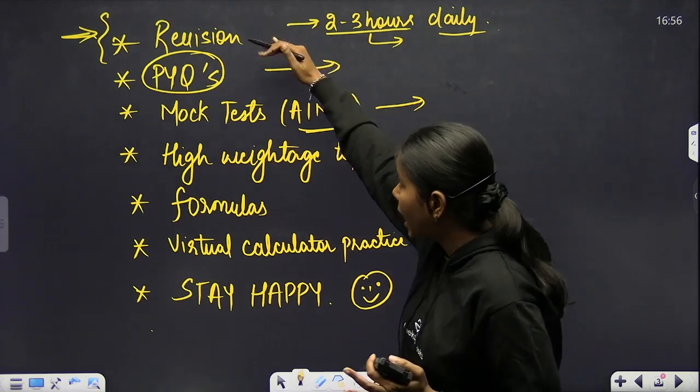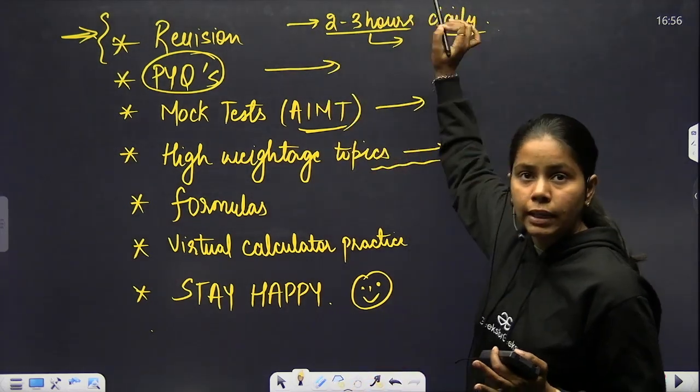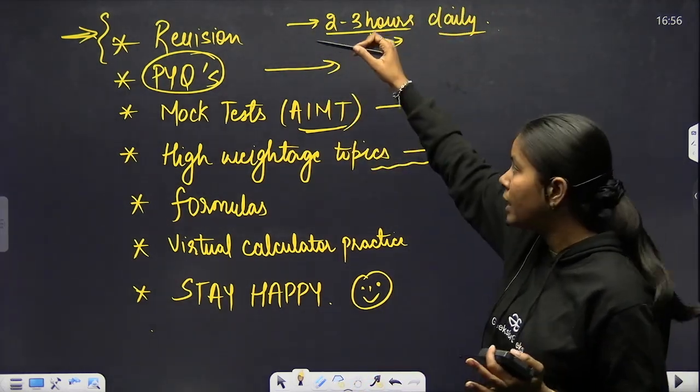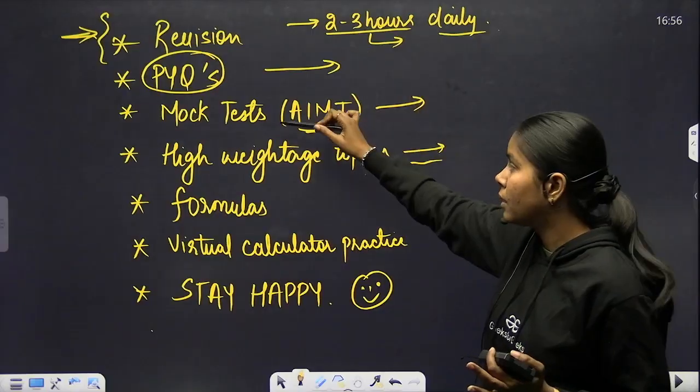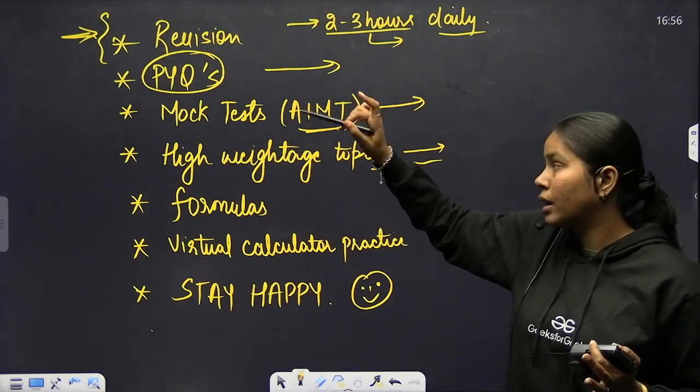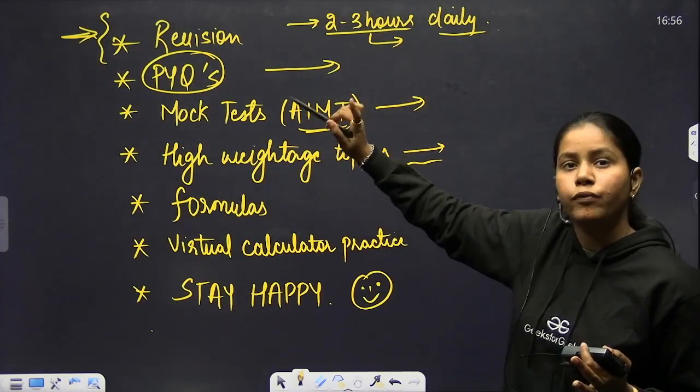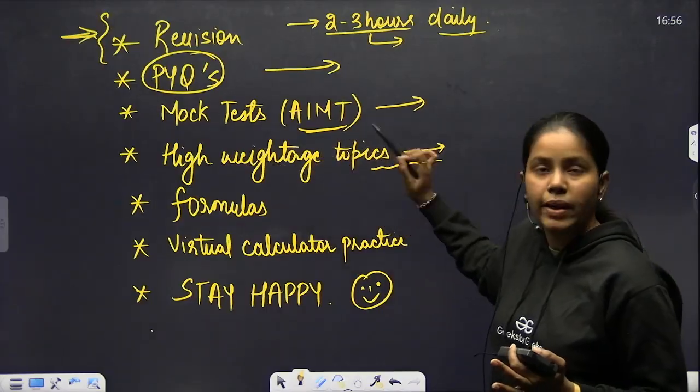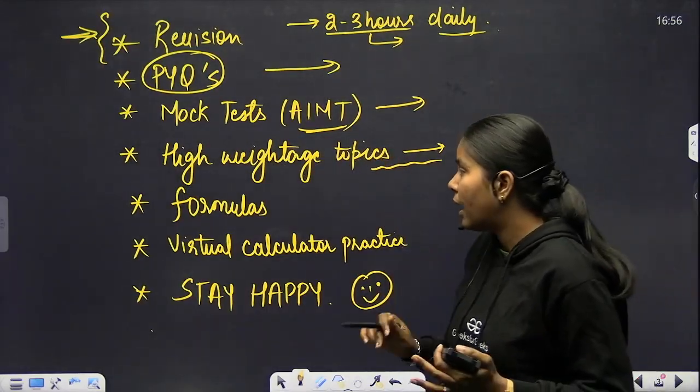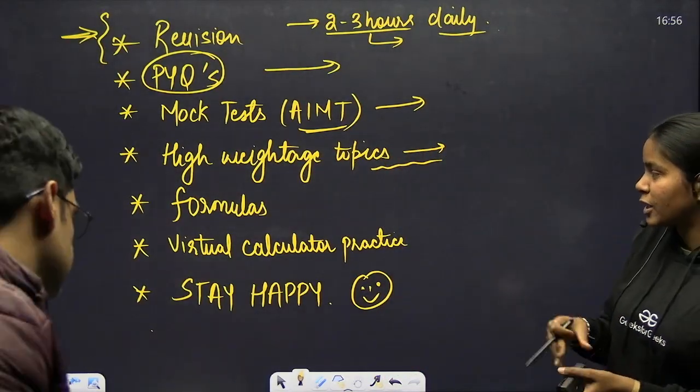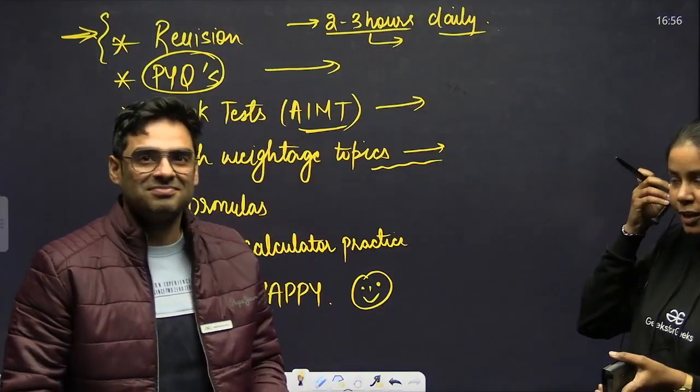Plan accordingly - for example, in DBMS these topics are important and we usually forget them. So we have a plan: two to three hours daily for revision without skipping, solving previous year questions, giving one mock every three to four days, and revising high weightage topics. Now I'll welcome Pat sir to discuss formulas and virtual calculator.